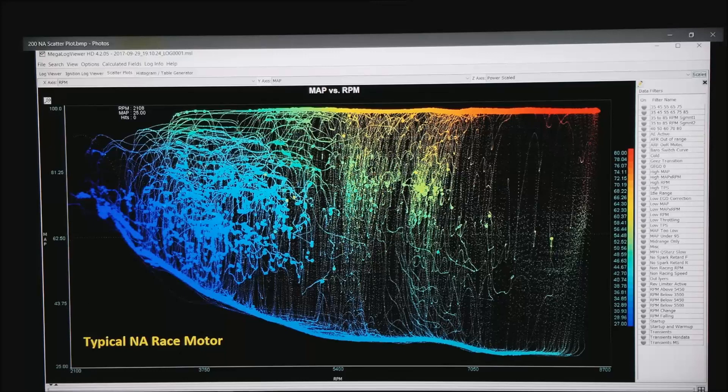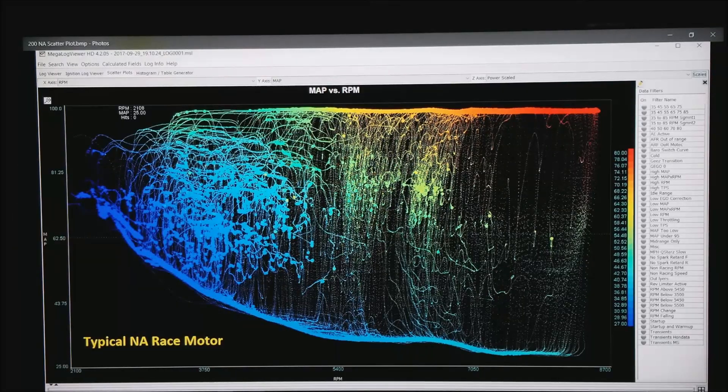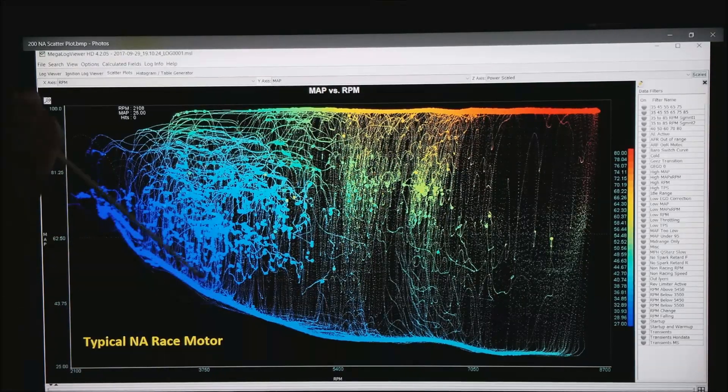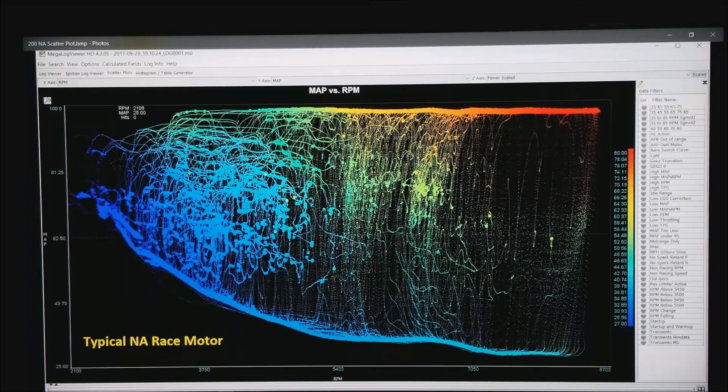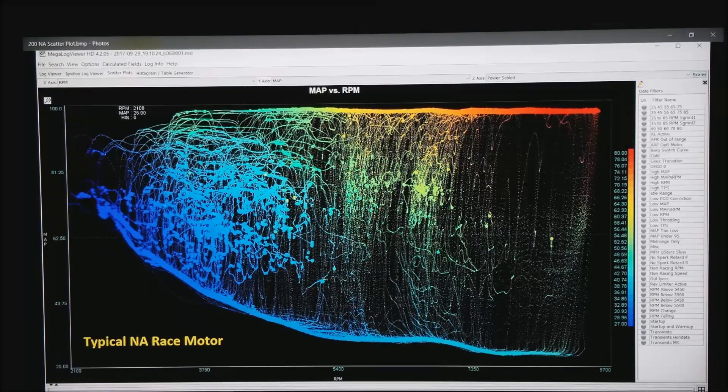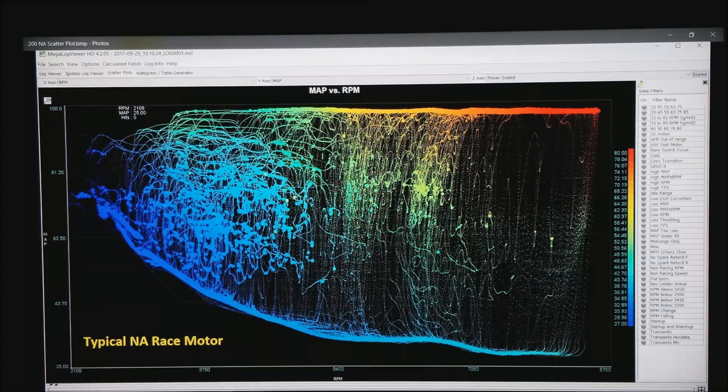Anything on the left is either running around in the pits, getting onto course, or driving during a caution. This particular motor operates pretty much above about 5,000 RPM while on course.